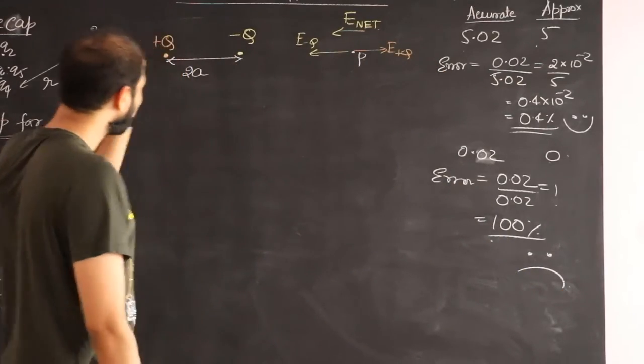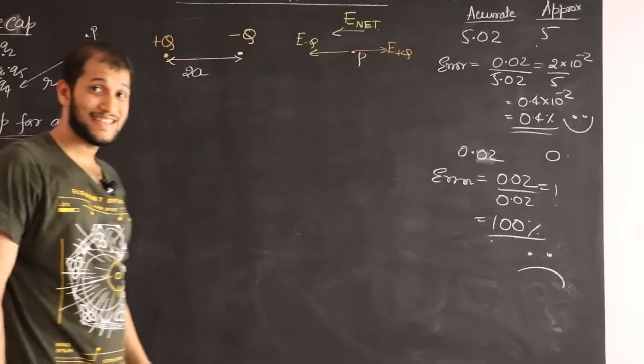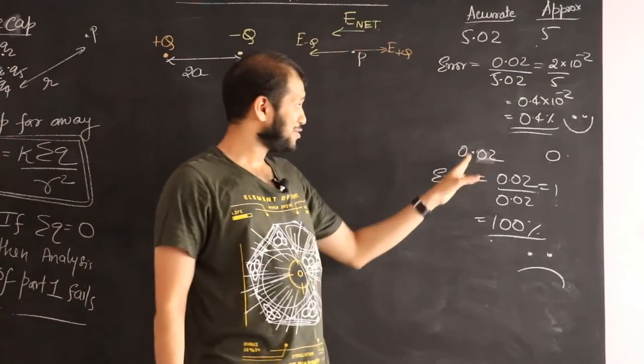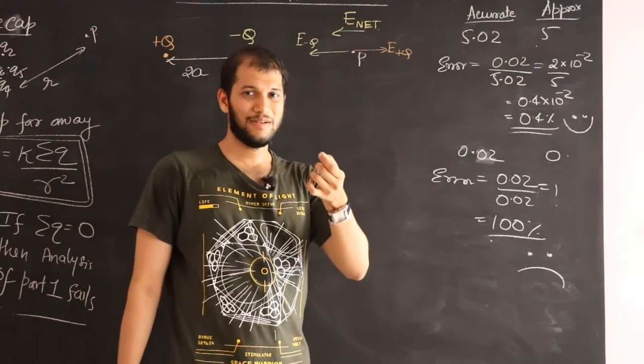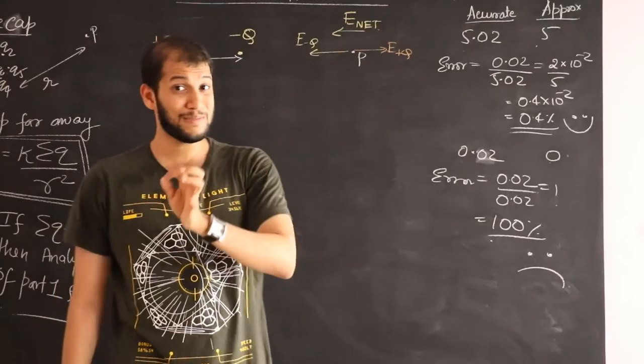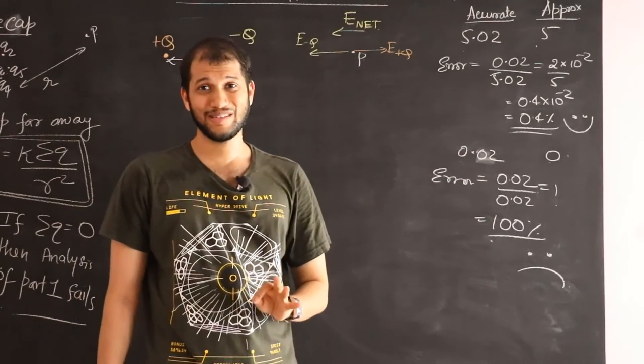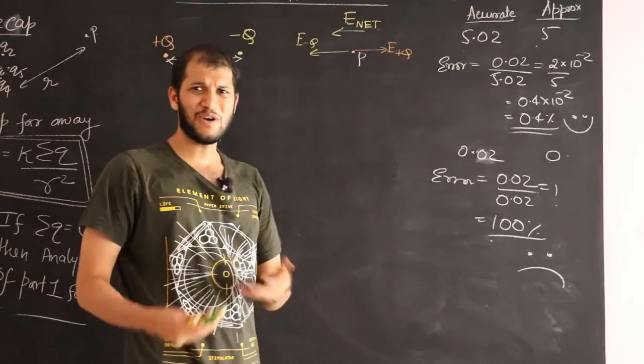The problem with plus Q and minus Q is that when you use the approximation, you get 0, whereas it's not supposed to be 0. It's supposed to be a very tiny number. When a tiny number gets approximated as 0, it's wrong. You can't use that approximation. We do something very similar with cos and sine.